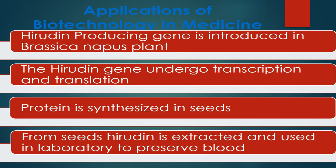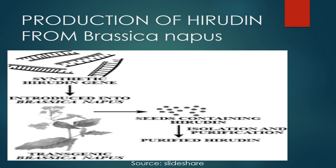Hirudin accumulates in the plant, mainly in the seeds. The extracted oil from the seeds may contain hirudin. This is a cheaper method of extracting hirudin from Brassica napus. This picture shows the production of hirudin from Brassica napus.